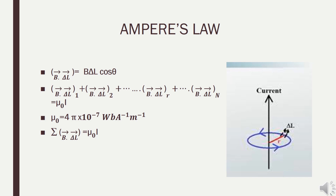So, B·ΔL₁ + B·ΔL₂ + B·ΔL₃ + ... + B·ΔLₙ = μ₀ × current. Here μ₀ is the permeability of free space, whose value is 4π × 10⁻⁷ Weber per Ampere-meter. Permeability of free space is analogous to permittivity of free space (ε₀) in electric fields — just as ε₀ describes how much a medium permits electric field lines to pass through, μ₀ tells us how many magnetic field lines pass through an area.